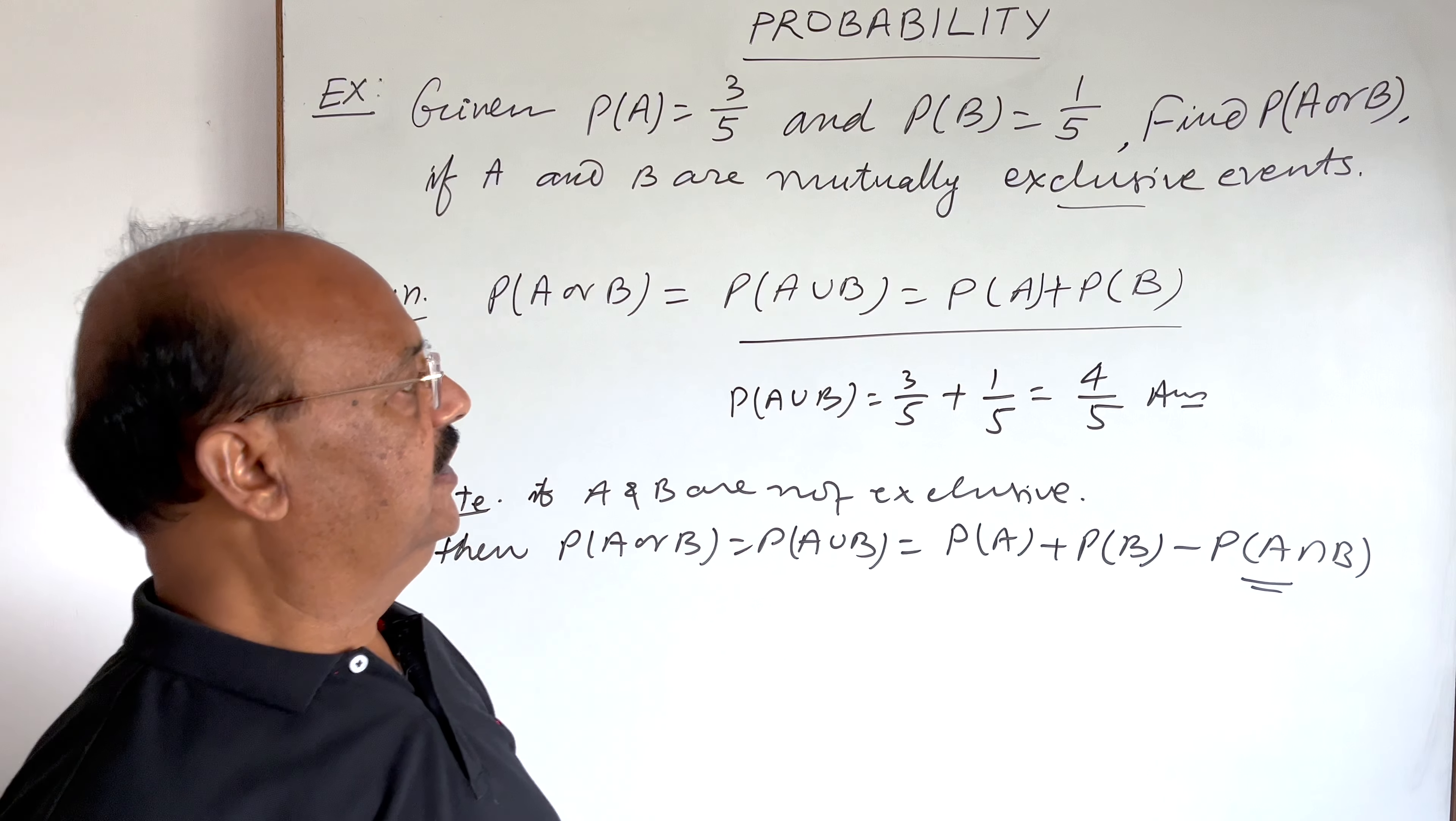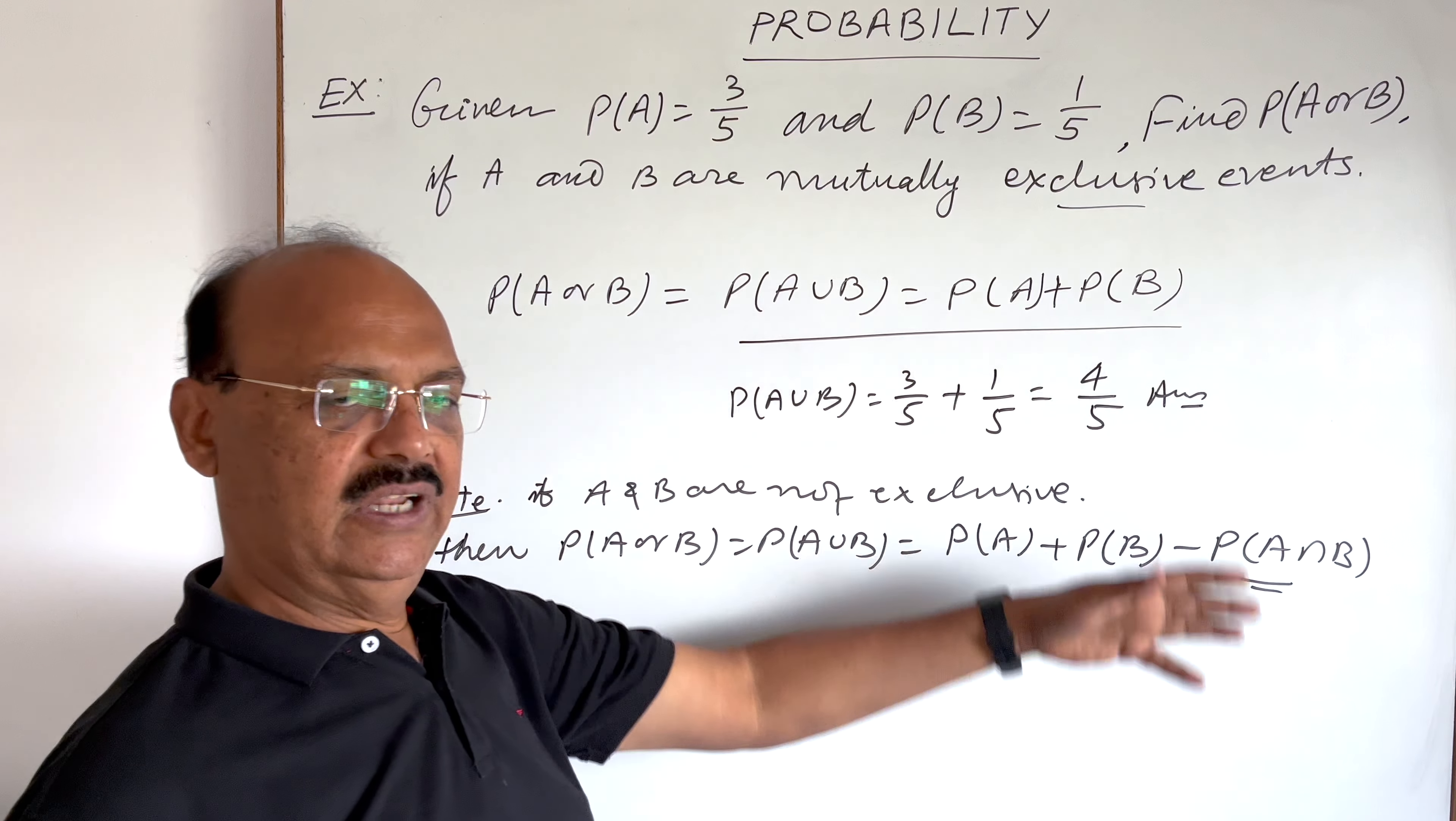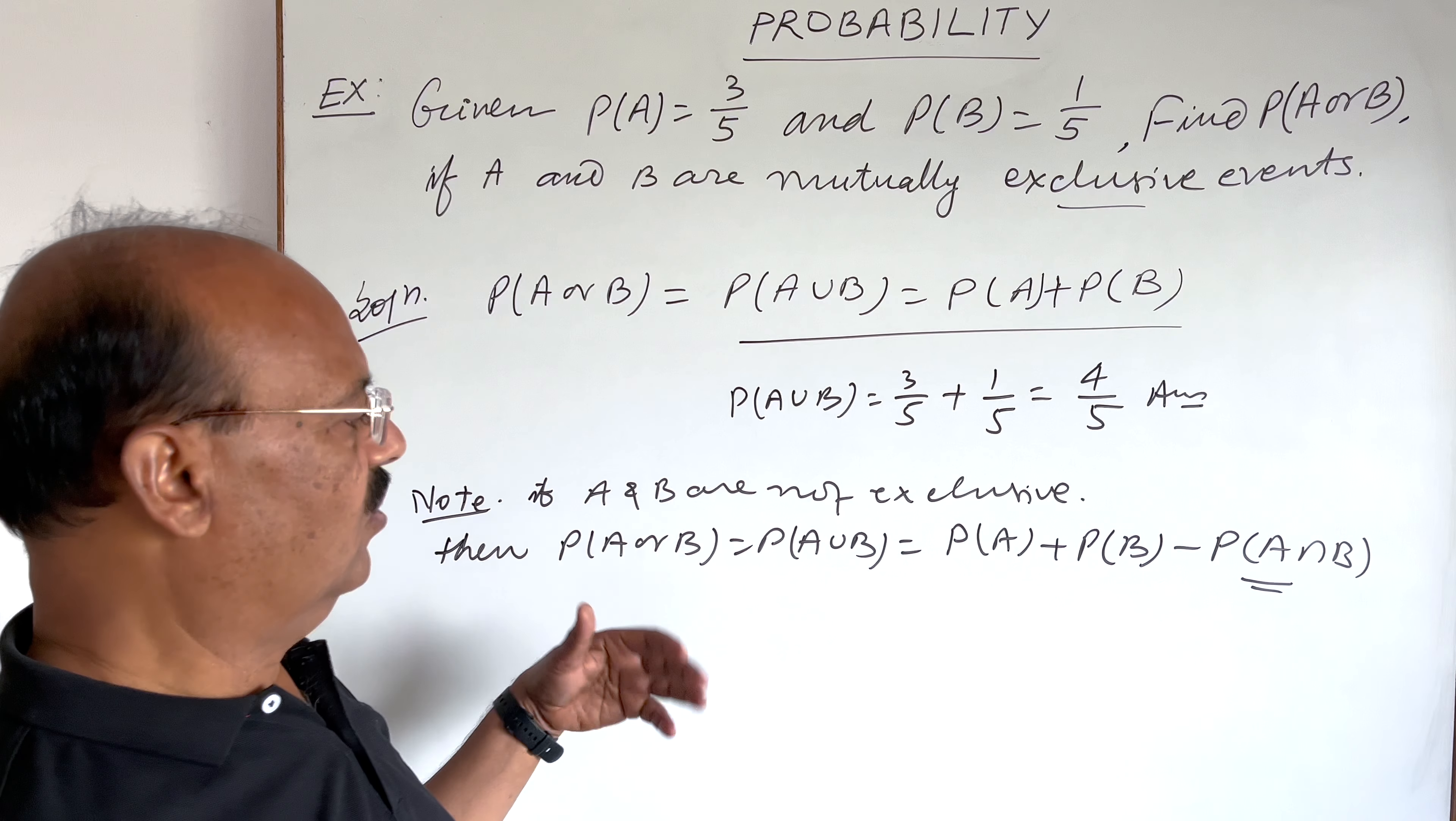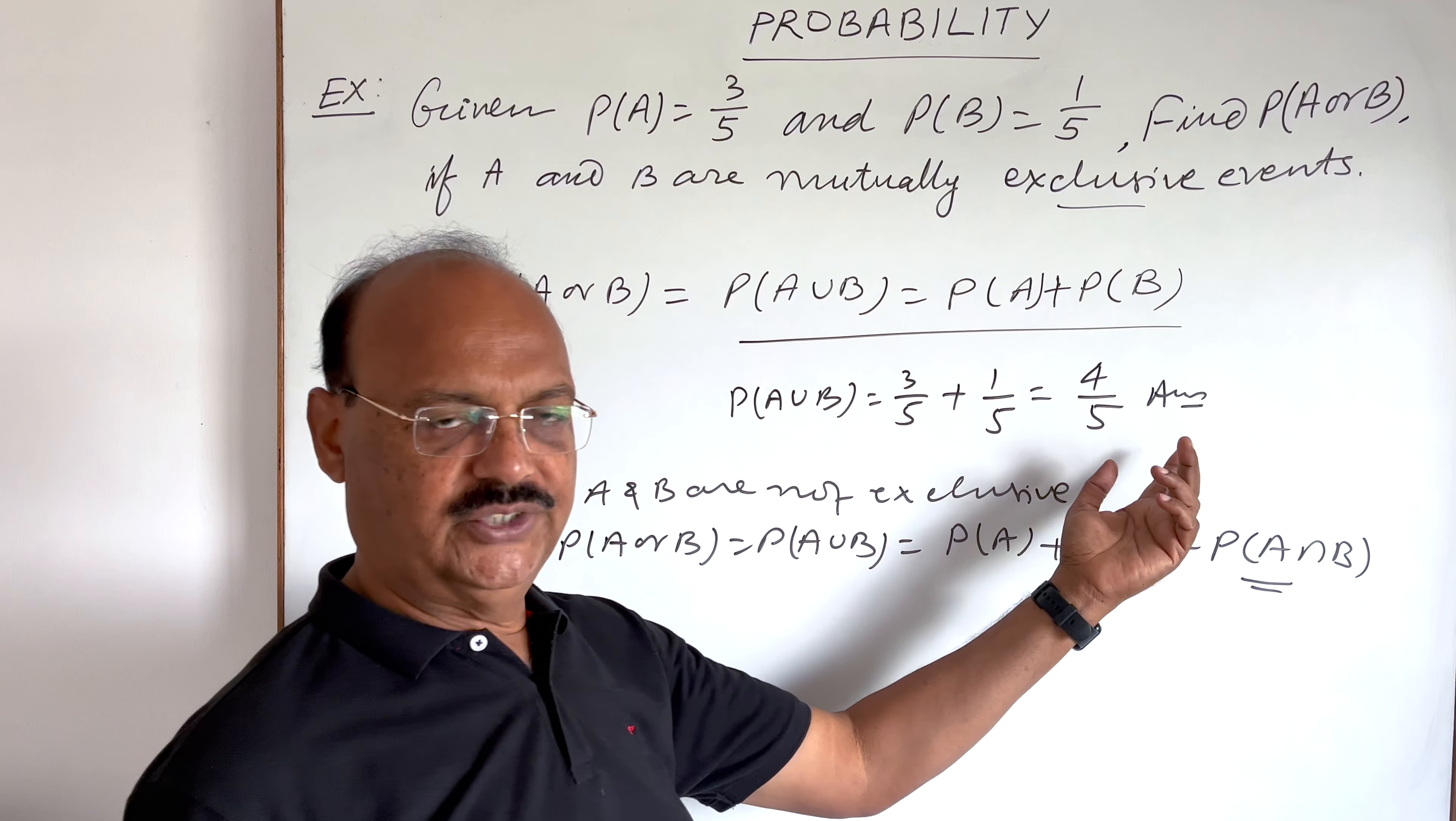But since these two events A and B are exclusive, so we can use this formula. But whenever you get a question where these two are not exclusive, A and B, then we will use this formula. So easily we are getting this solution here.